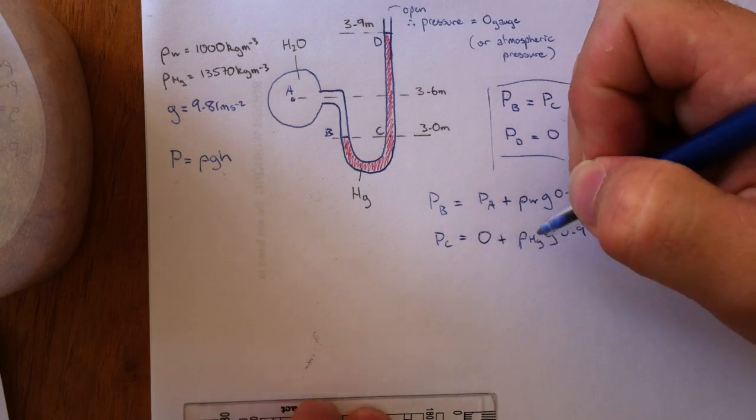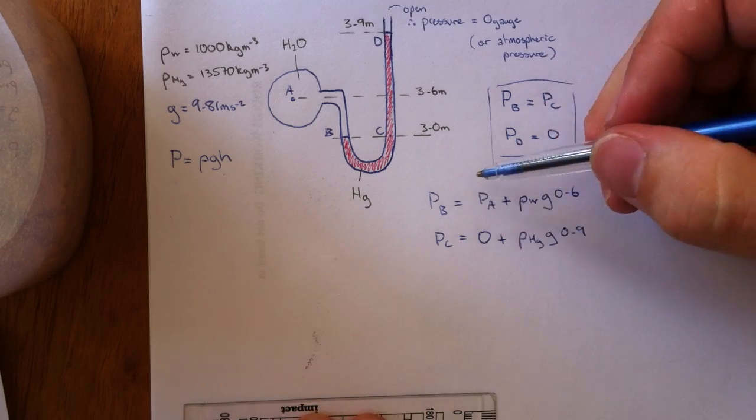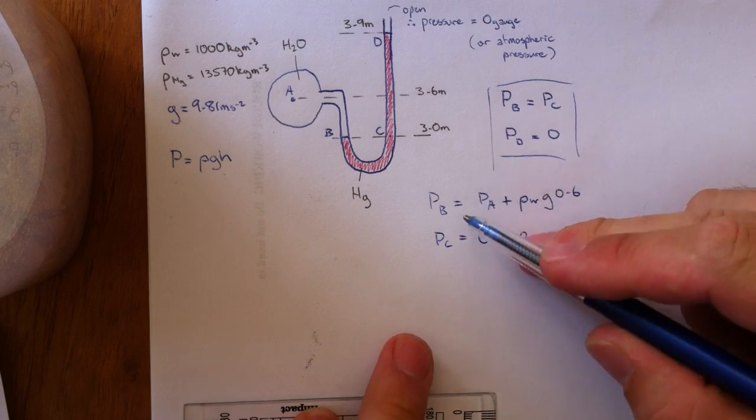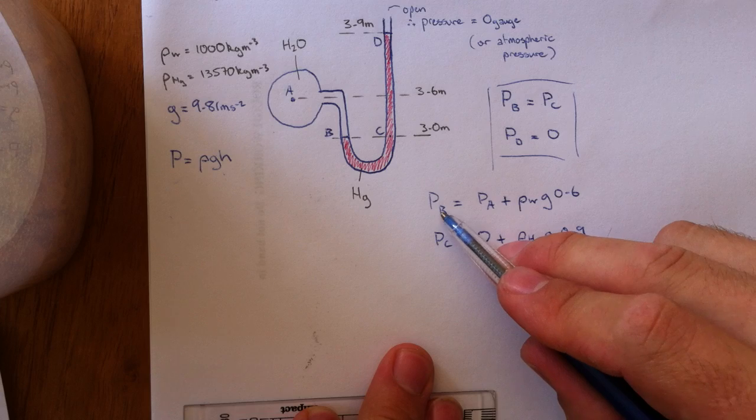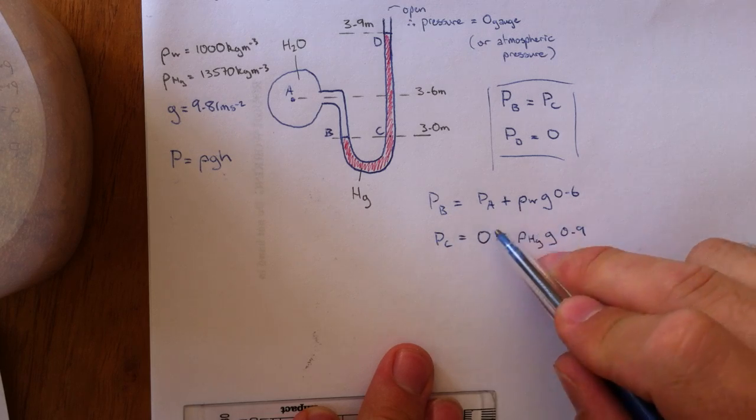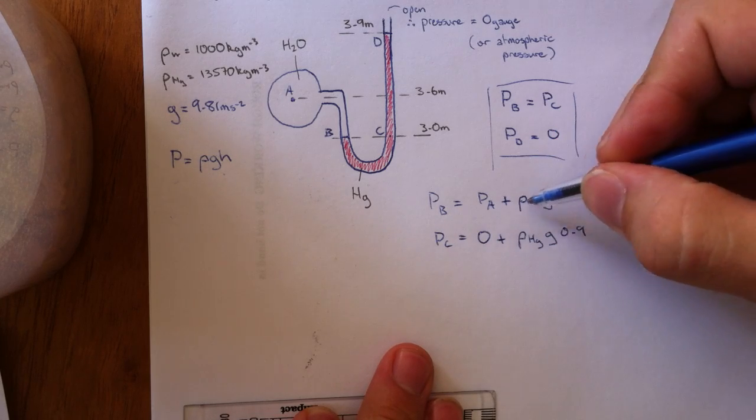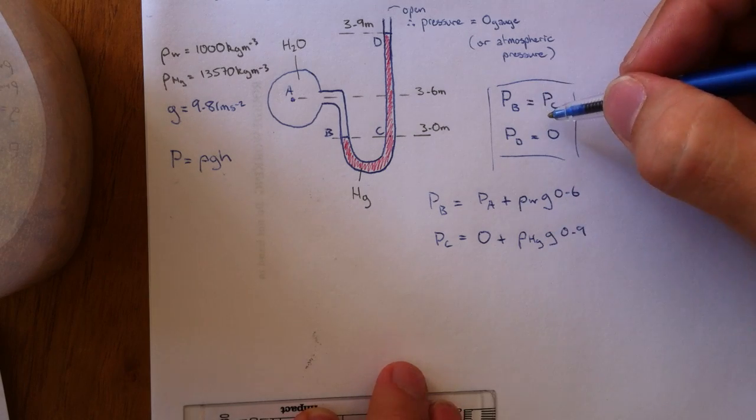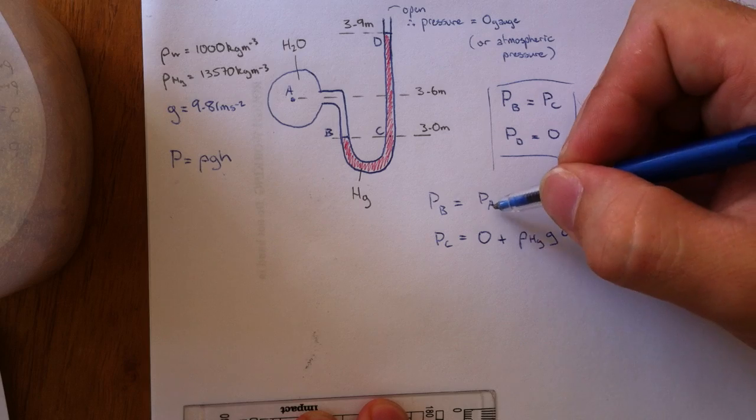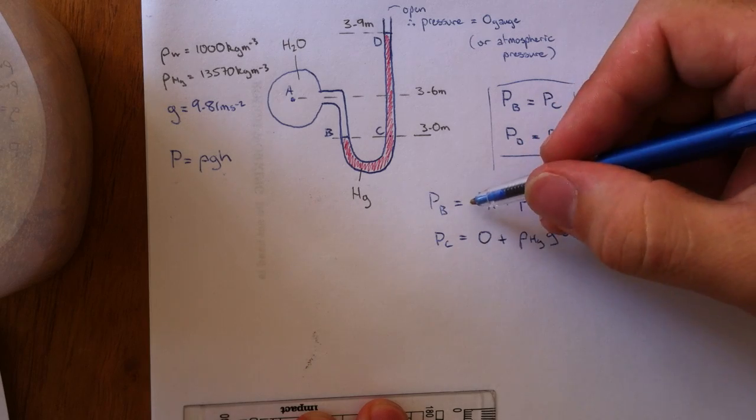Now we've got ourselves two equations here and if you can see that PB equals PC, you can see that these two here actually equate based on this principle here. So what we can do is rewrite these two as one.